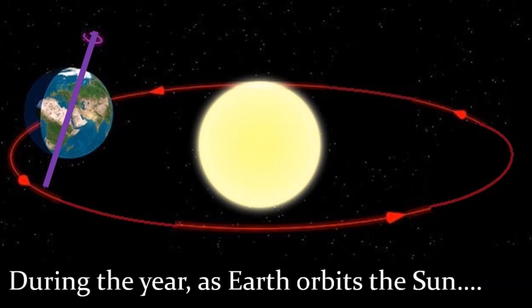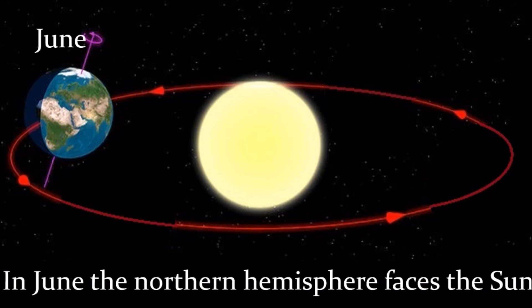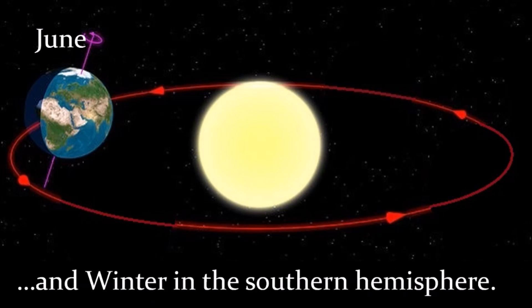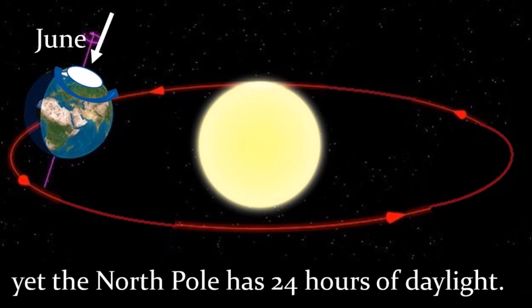During the year, as Earth orbits the Sun, it changes which place gets the most sunshine. In June, the Northern Hemisphere faces the Sun, creating summer in the northern half of Earth and winter in the Southern Hemisphere. Antarctica is covered in darkness these months, yet the North Pole has 24 hours of daylight every day.